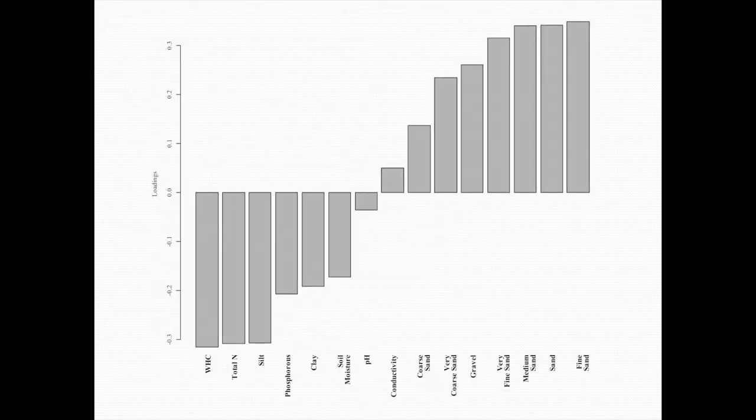This graphic shows the results of the principal component analysis — specifically the first principal component. The big thing to notice is that some bars go up and some go down. Look at the few bars that are large in absolute value in each direction. On the right-hand side you've got a lot of soil particle sizes. On the bottom left you've got nutrients and water holding capacity. From an ecotox perspective, this is telling me there's a gradient in soil nutrients that is a function of grain size.